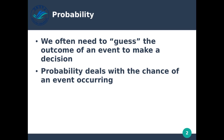Probability deals with the chance of some event occurring. Knowing the probability of some event occurring, or knowing when an event is likely or less likely to occur, is very beneficial in basically everything we do. For example, knowing the chance that a stock price is going to increase or decrease would help us decide whether we should buy or sell stocks, which directly relates to our finances.